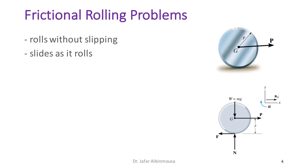For the free body diagram of this drum, we have its weight acting downward, the applied force P acting at a distance r from the surface, the normal force acting upward, and the friction force acting in the direction opposite to the motion.